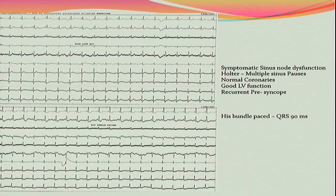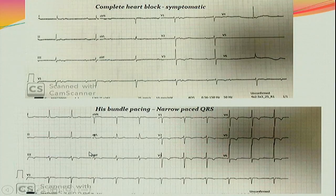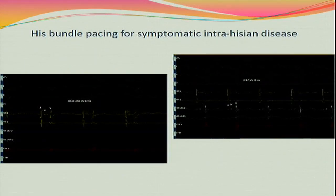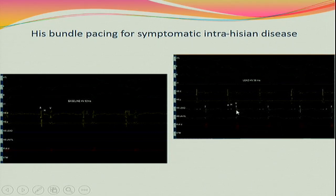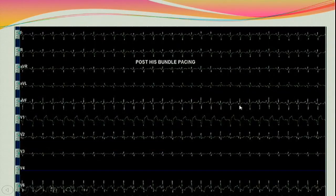For a symptomatic sick sinus syndrome case, the routine ECG and the paced ECG look almost identical — you can hardly find any difference. For an AV nodal block with symptomatic complete heart block, the His bundle was paced and the QRS is as good as the native QRS. For an intra-Hisian block, by placing a catheter in the His bundle region you can assess His bundle conduction — the baseline HV was 92ms, so I mapped to find an area where the HV was normal at 55ms, screwed in there, and the QRS is excellent.